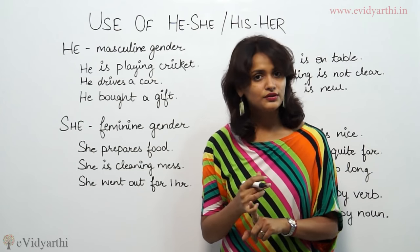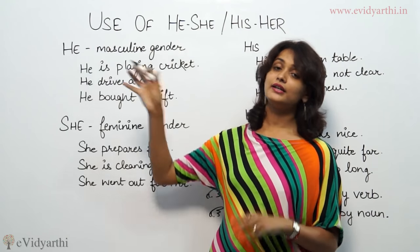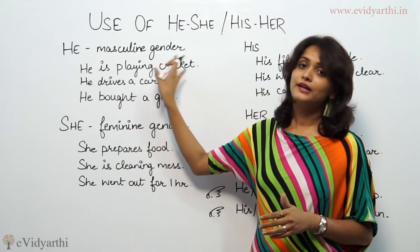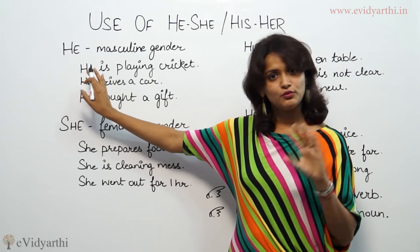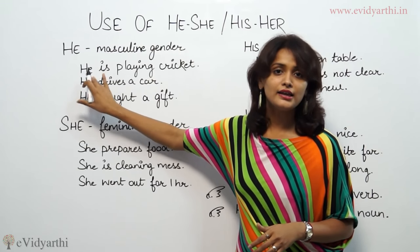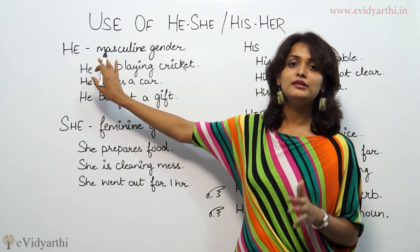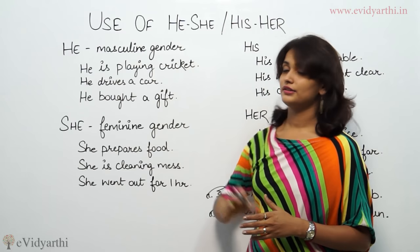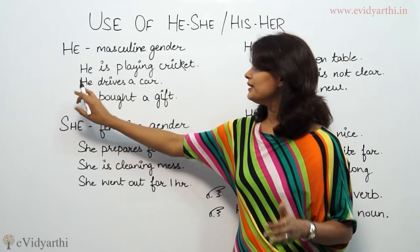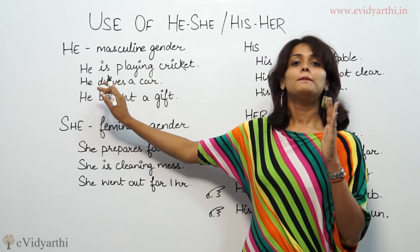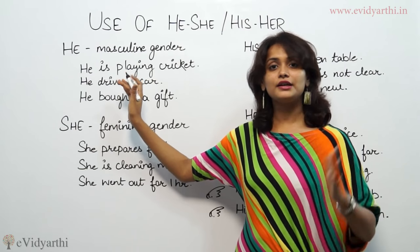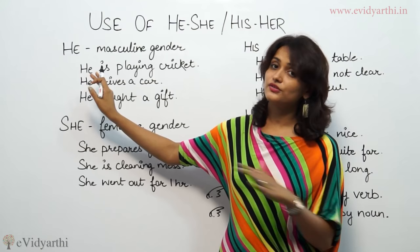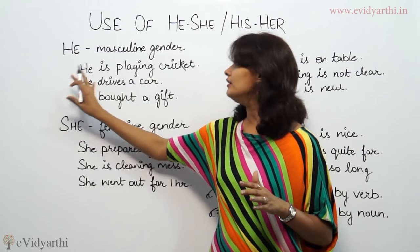Which verb? Definitely some form of a verb — auxiliary or helping verb. That is what the examples show. 'He is playing cricket' — here 'he' is the subject word, and 'is' is the auxiliary verb followed by the main verb. 'He drives a car' — here the auxiliary verb is not present, but the main verb 'drives' is compulsory. So it is compulsory that he or she will be followed by any verb. If you don't write an auxiliary verb, the main verb is compulsory.